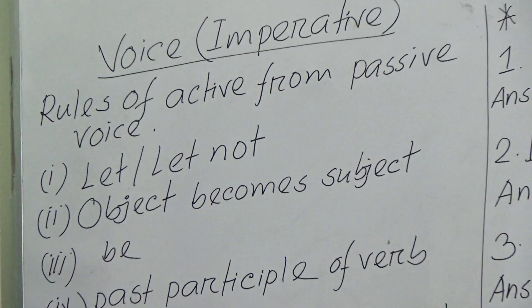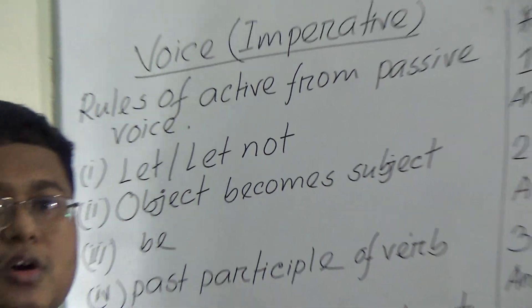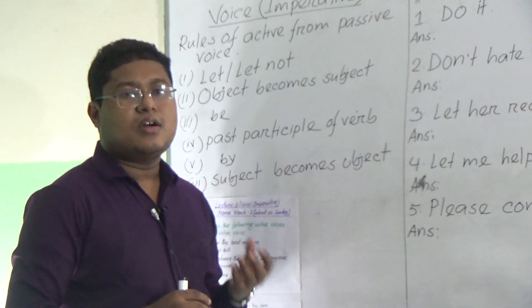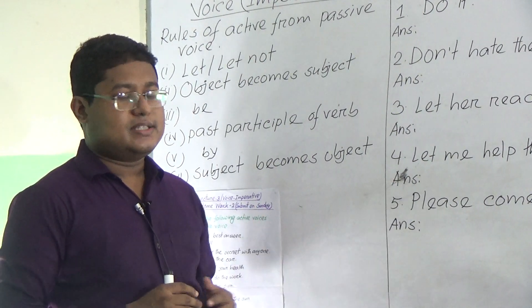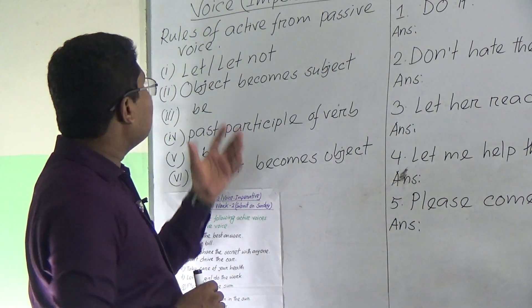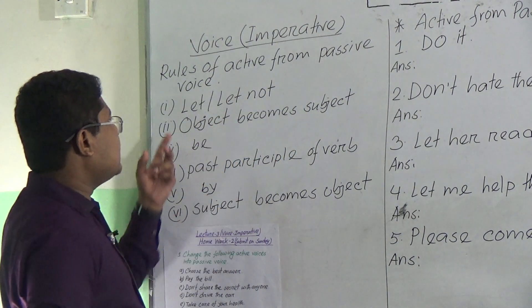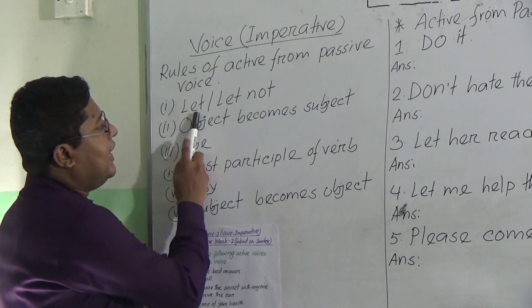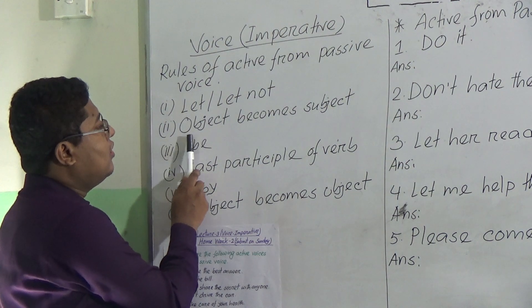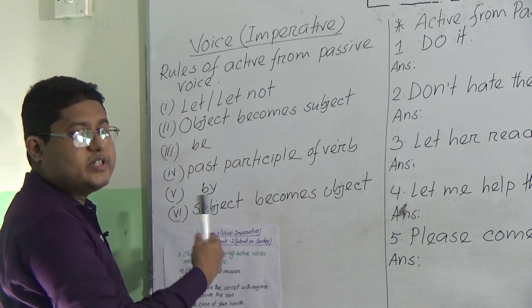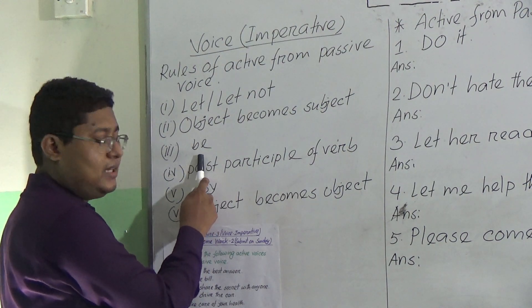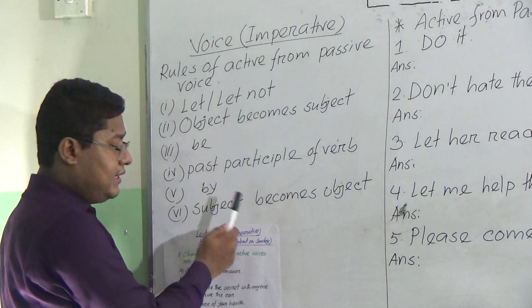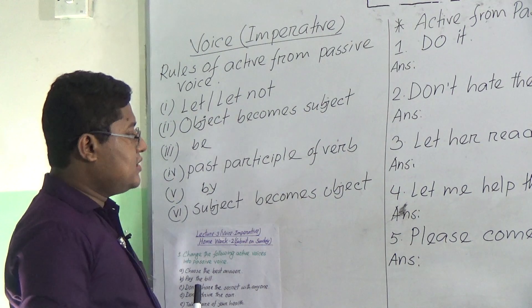Today's topic: Voice, Lecture 3 — Imperative. This is the third class and very important because I will give homework at the end of the class. First, we have to know what an imperative sentence is. An imperative sentence is a sentence of request, command, order, proposal, or suggestion. Rules for converting active to passive voice: First, use 'let' or 'let not.' Second, object becomes subject. Third, use 'be.' Fourth, past participle of the verb. Fifth, 'by.' Sixth, subject becomes object.